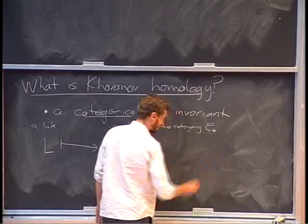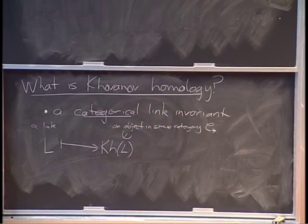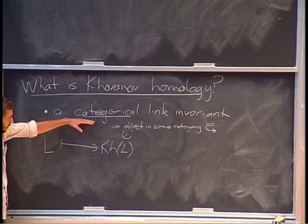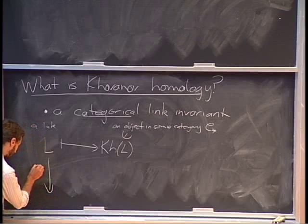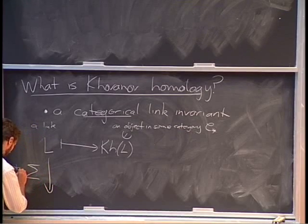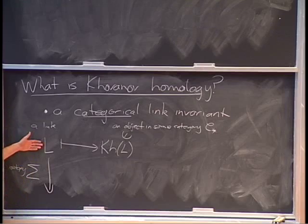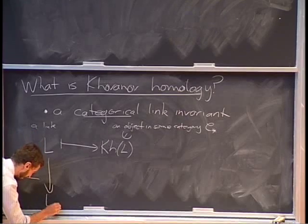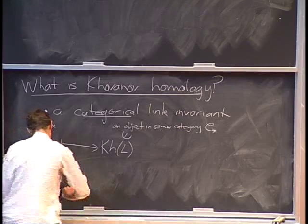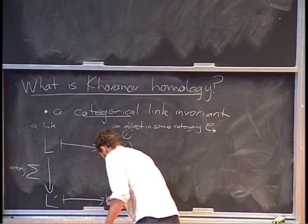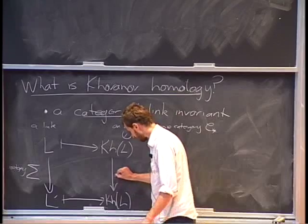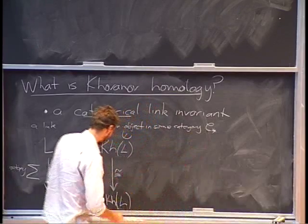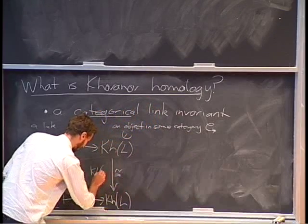Which, today I'm going to call C star, because I needed to come up with a name. Now, what do I mean by categorical? Say that I have some isotopy. Sigma is some surface with two boundary components — one boundary component is one link, another boundary component is another link.